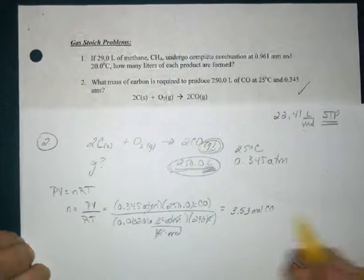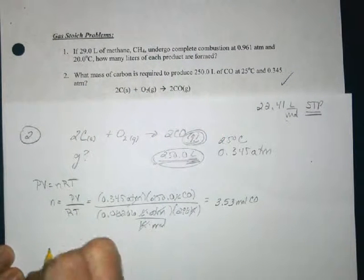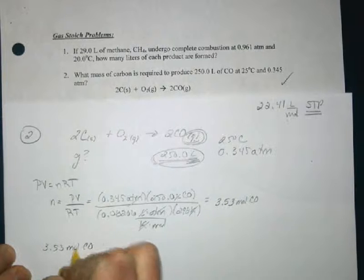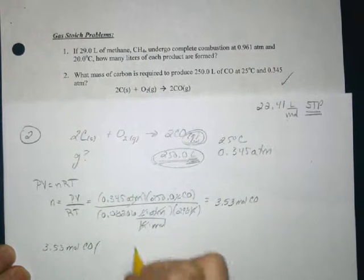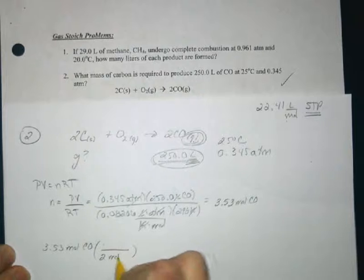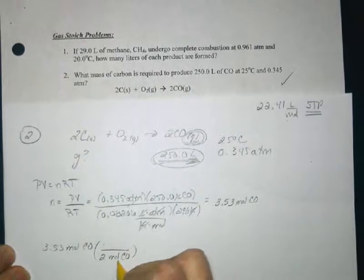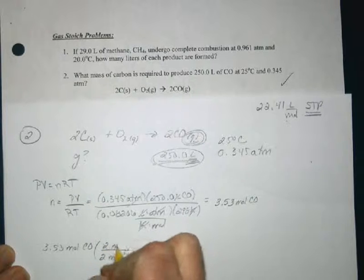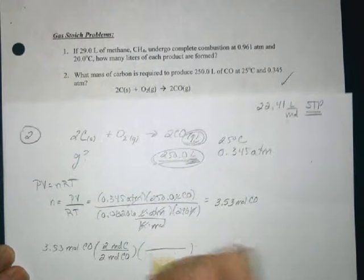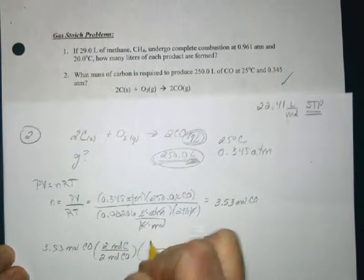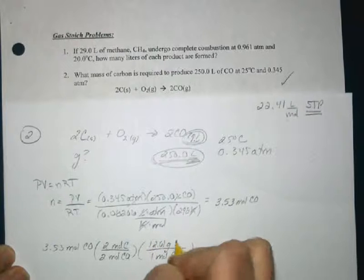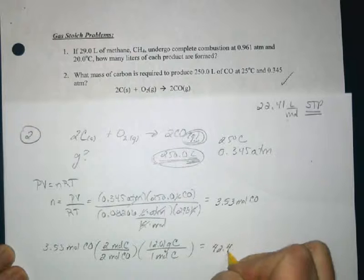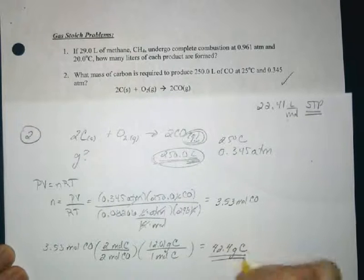I'm going to begin my stoichiometry. Now that I'm in moles of my carbon monoxide, I can go right to using the balanced equation with the mole ratios — moles of carbon monoxide to moles of carbon — and one mole of carbon is 12.01 grams, giving us 42.4 grams of carbon as my answer.